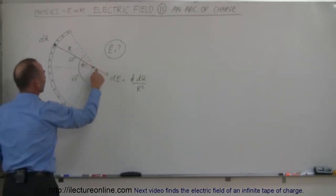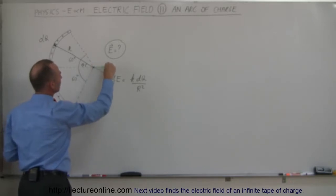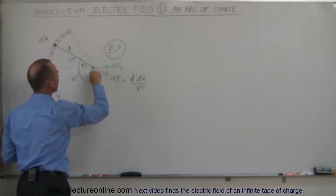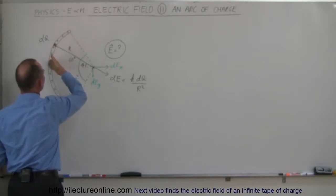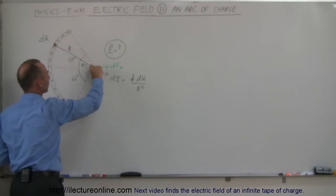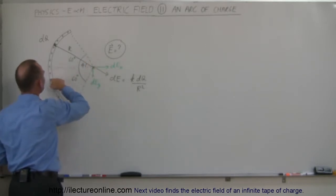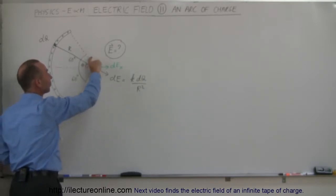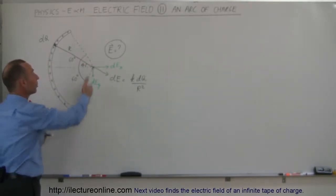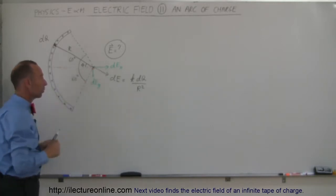DE will have a horizontal and a vertical component — a DE in the X direction and a DE in the Y direction. All segments on the top half of the arc have a vertical component in the negative direction, and all segments on the bottom half have a vertical component in the positive direction. By symmetry they cancel out, so we only need to worry about the horizontal components, the DEX.